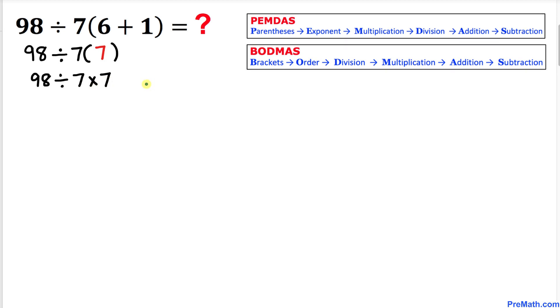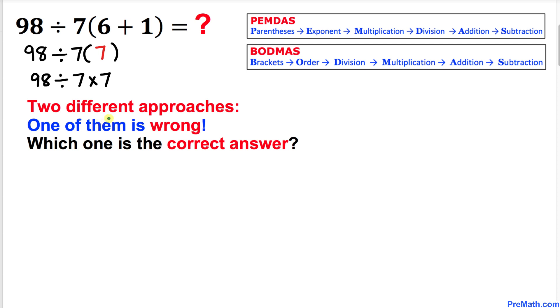And now here's the sticky part. I am going to show you two different approaches. One of them is going to be wrong. So you are going to tell me which one is the correct answer. And here's our very first approach. This time I am going to take care of 98 divided by 7.